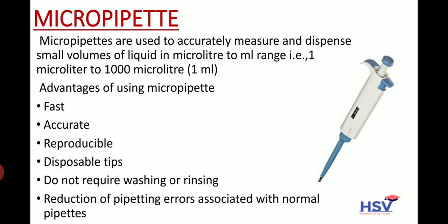To use a micro pipette, adjust the volume using the tap at the top, then suck the volume and transfer it. Advantages of using a micro pipette: fast, accurate, reproducible; uses disposable tips; does not require washing or rinsing; and reduces pipetting errors associated with normal pipettes.